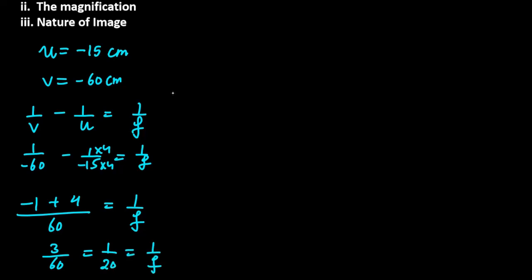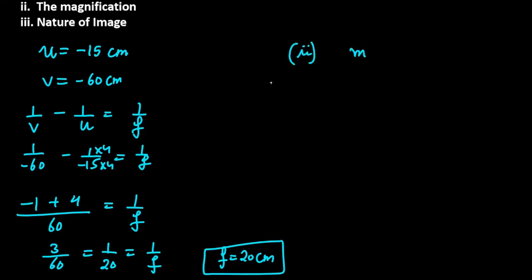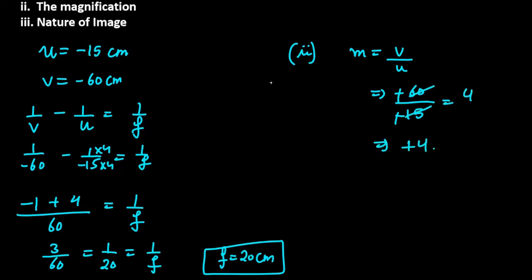So the focal length of the first part is 20 centimeters. Now for the second part, we need to find the magnification. Magnification is v over u, which is minus 60 over minus 15. The negatives cancel, and 15 into 60 simplifies to give us plus 4 as the magnification.